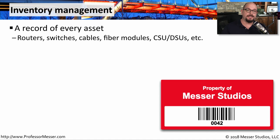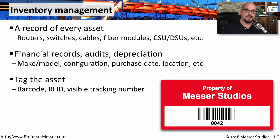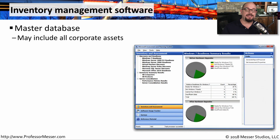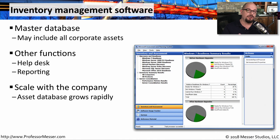It's also useful to have documentation of what devices you have on your network. You need a record of every single asset — routers, switches, cables, fiber modules, CSU-DSUs, and any other network equipment in your infrastructure. This not only helps you understand what equipment you have and where it's located, but it helps your accounting team understand how depreciation of these devices will be handled. Some organizations add an asset tag to the device with a visible tracking number tied back to the database. The database itself is probably a formal inventory management software that may include not only device inventory but also help desk and reporting functionality, and as the organization grows, you can add all new assets so you'll always know exactly where your inventory is.